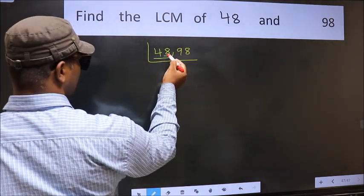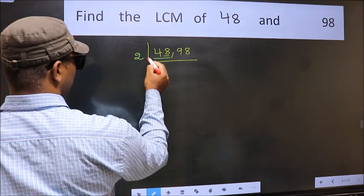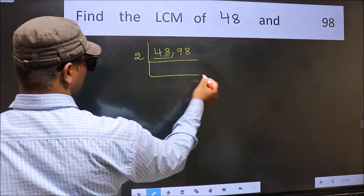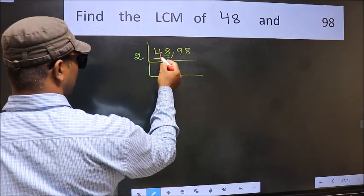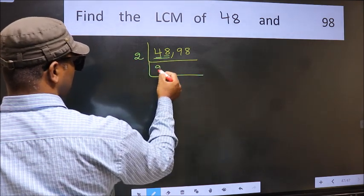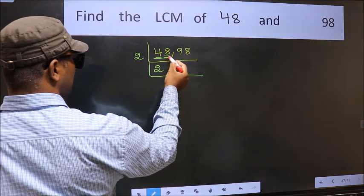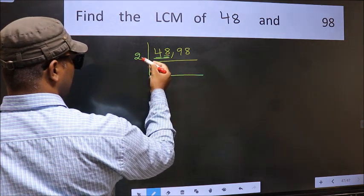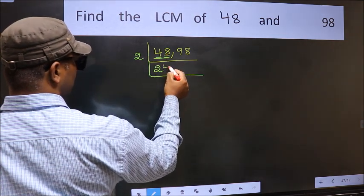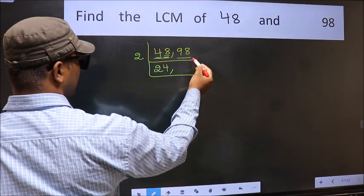Now focus on the first number, which is 48. The last digit is 8, which is even, so take 2. First number 4 — when do we get 4 in the 2 table? 2 twos are 4. The other number 8 — when do we get 8 in the 2 table? 2 fours are 8.